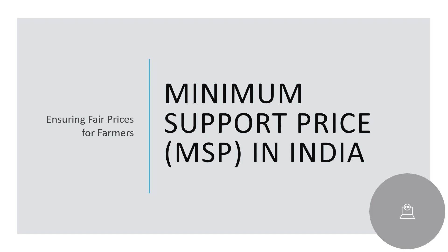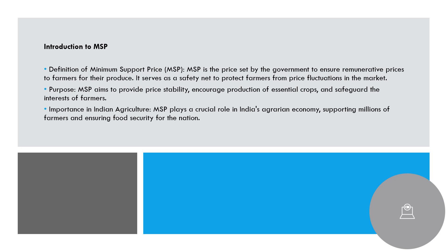Today we will discuss Minimum Support Price in India — why it was introduced, when it was introduced, what it actually is, and how it helps. MSP has recently been in the news due to the farmer protests 2.0, ongoing under the name 'Dilli Chalo'. It started in 1960 when the Green Revolution was introduced, mostly to encourage farmers to sow particular kinds of grains, as India had to import grains heavily at that time. This topic forms a part of UPSC Paper 3.